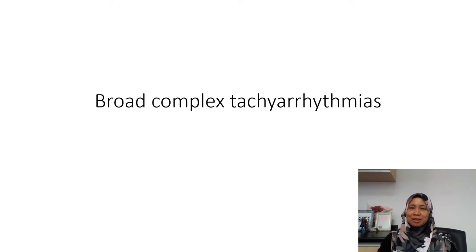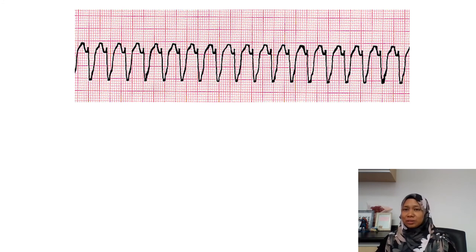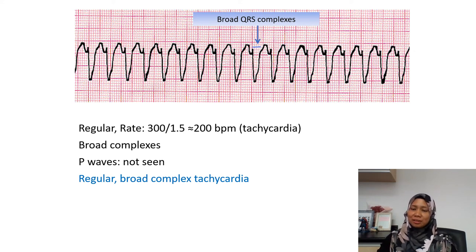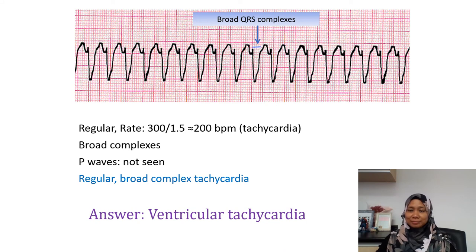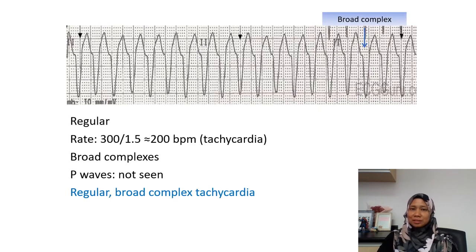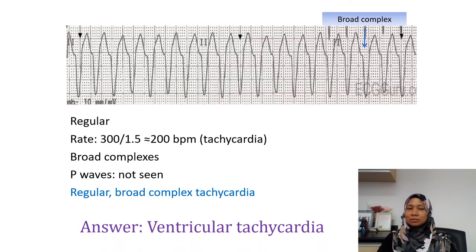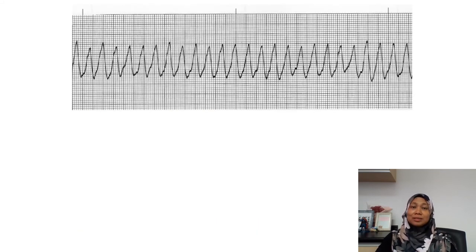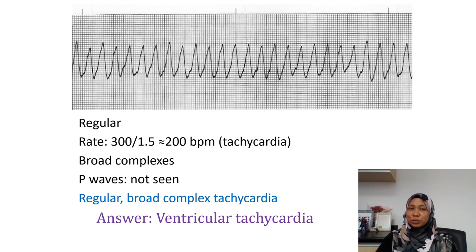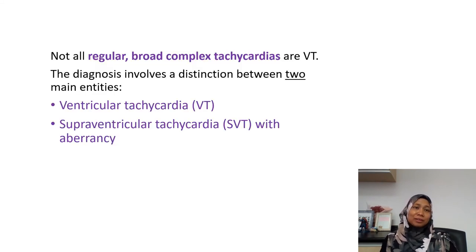Now let's go to broad complex tachycardia. The first strip shows a regular rhythm, rate about 200 beats per minute, broad complexes, and P waves are not seen — this is a regular broad complex tachycardia, and the answer is ventricular tachycardia. The next two strips are also regular broad complex tachycardias — both are ventricular tachycardia. However, not all regular broad complex tachycardias are ventricular tachycardia; we also have supraventricular tachycardia with aberrancy.